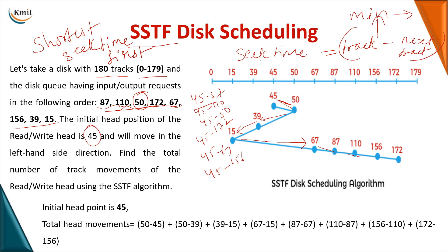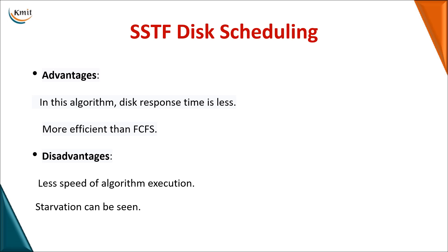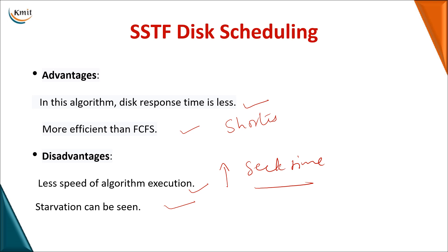For the seek time calculation in SSTF, we take pairs: 50 minus 45, then 50 minus 39, then 39 minus 15, and so on. In SSTF, disk response time is much less and it is more efficient than FCFS because we always choose the shortest seek time. However, execution is slower since for every movement we must calculate the seek time. Starvation is also possible, because requests far from the current head position may be repeatedly skipped.